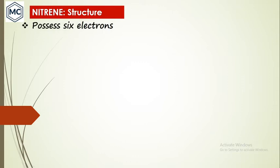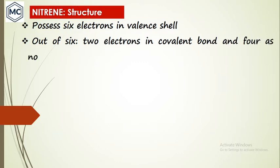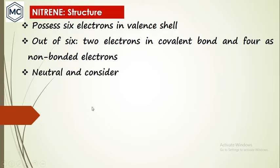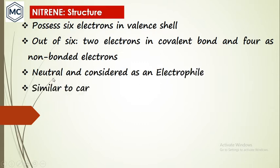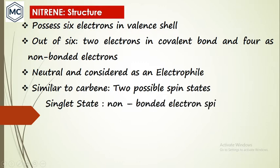What is the structure of nitrene? Nitrene possesses six electrons in its valence shell. Out of six, two electrons are used for making the R–N bond; the remaining four are present as non-bonded electrons. Overall, nitrene is a neutral species and it is considered an electrophile because it is electron-deficient, containing only six electrons.